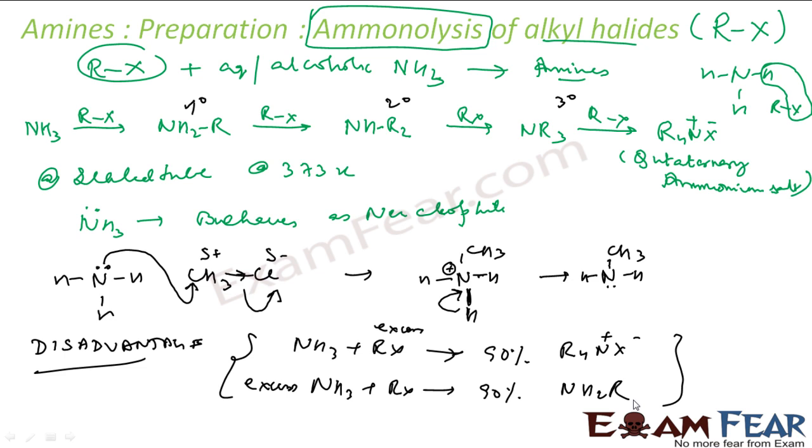We talk about the order of reactivity of haloalkanes. We have already talked about that a lot in the haloalkanes chapter. R-I is more reactive than R-Br, then R-Cl. Why? Because iodine is very big in size. If you see, iodine is this much big, then you have bromine, then you have chlorine. The size difference is too high. So it is easy to leave. I- is a good leaving group, so R-I is more reactive.